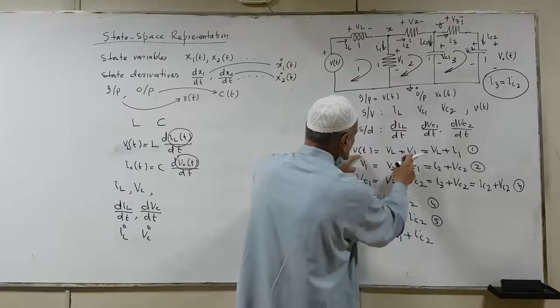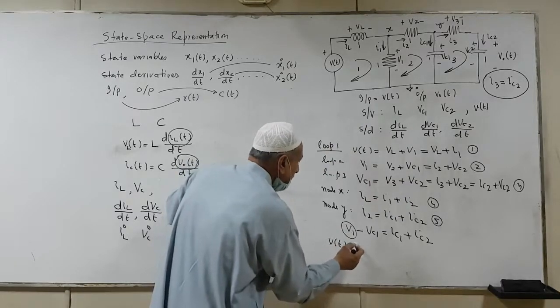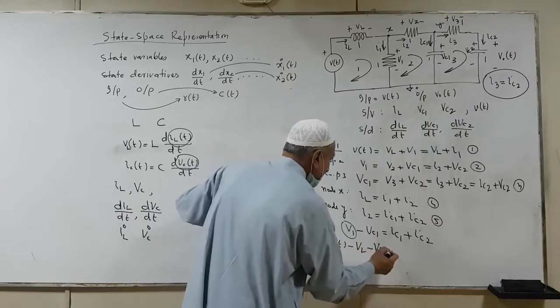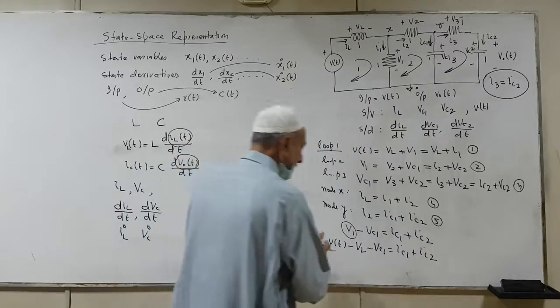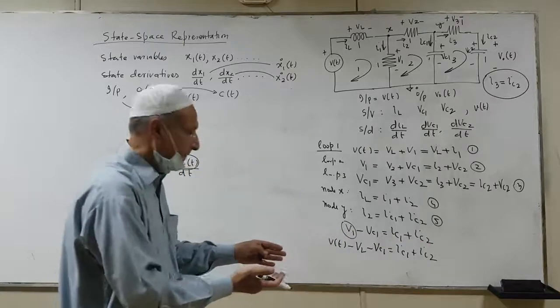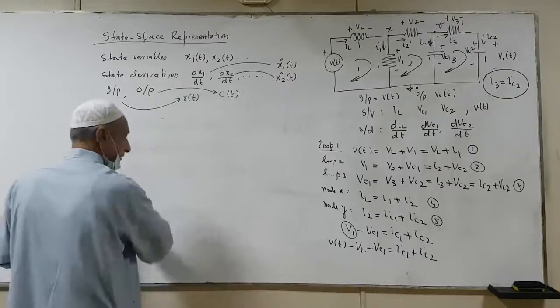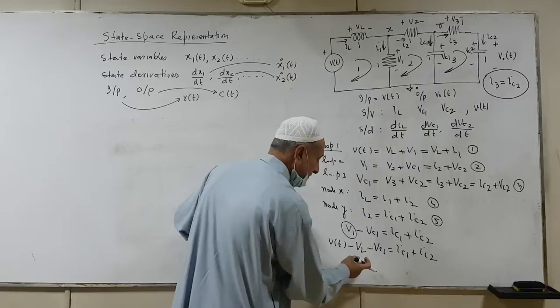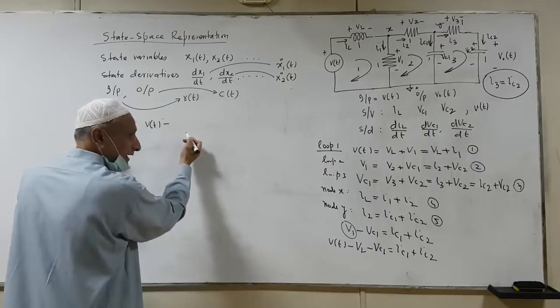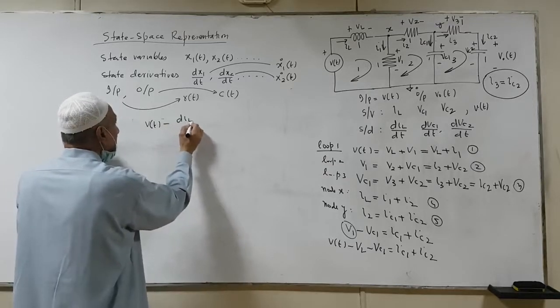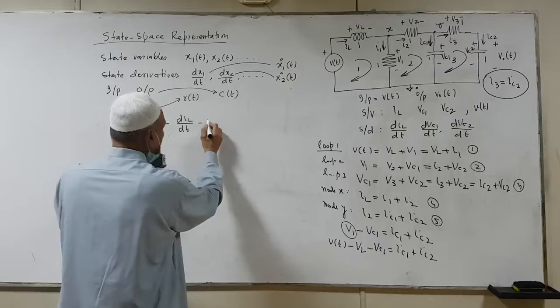I have this equation 1. So if I consider equation 1, I get Vt minus Vl minus Vc1 is equal to Ic1 plus Ic1. Now, everything is something like state function. So let's see the derivatives. I have a derivative over there which is Vt minus L dIL by dt. But L is 1, so I have dIL by dt minus Vc1.